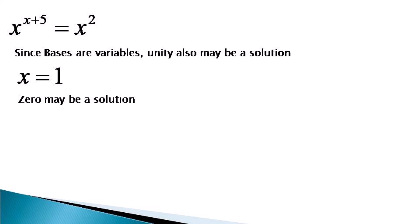Now 0 also may be a solution. Putting x equals 0, we find that the equation becomes 0 raised to the power 5 equals 0 square, which is perfectly all right. It is not coming into 0 raised to the power 0 kind of situation. So x equals 0 is also a solution.